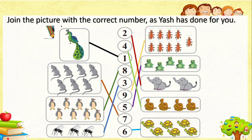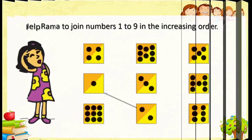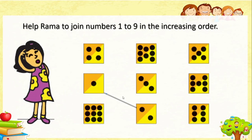Like this activity, you are also going to do this as homework. One more activity: help Rama to join numbers 1 to 9 in the increasing order. Increasing order means from smaller to bigger. Zero is smaller than 1. One and one makes two, so two is bigger than one. Join the numbers 1 to 9 in serial order — that is equal to increasing order.